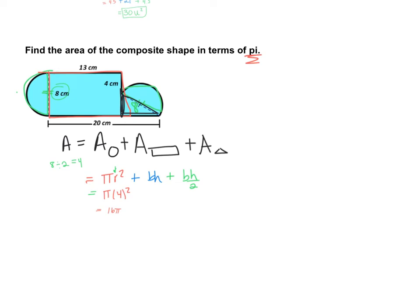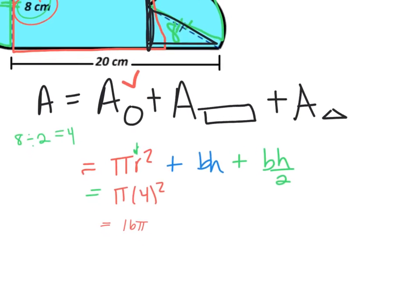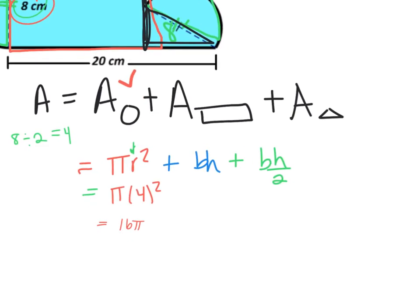Now, one thing I like to do, which I didn't do in the other examples, I like to put a little check above the circle or the shape after I find the area of it. Now I'm going to find the area of my rectangle. If I look at my picture, my base is 13 and my height is 8. I type that into my calculator and I get 104.